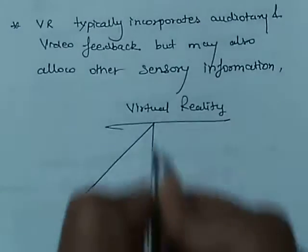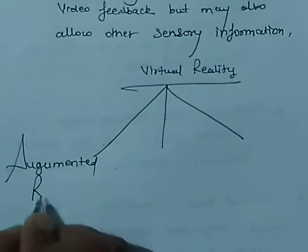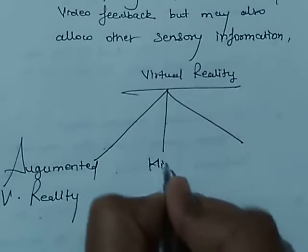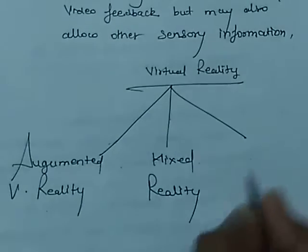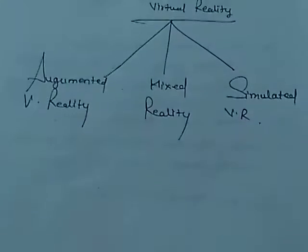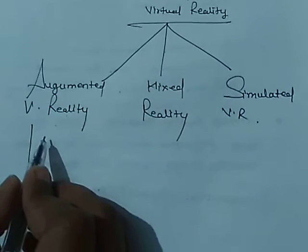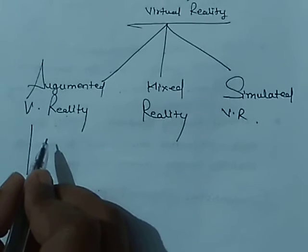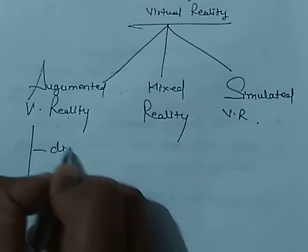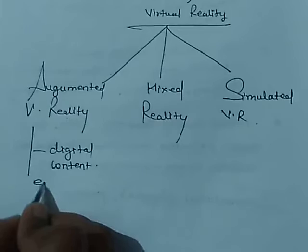Virtual reality is of different types. For example, augmented virtual reality is a type of reality that blends what the user sees in their real surroundings with digital content generated by computer software. For example, we can say smart glasses.